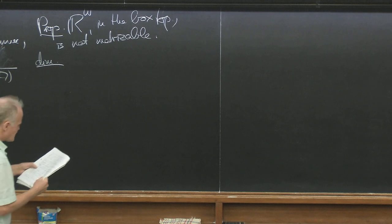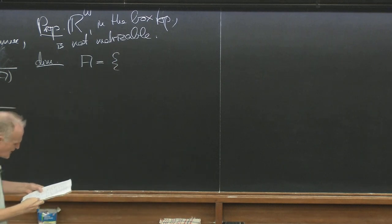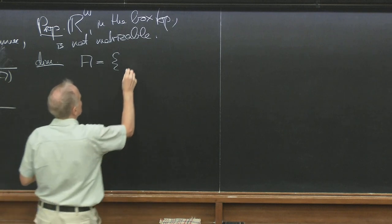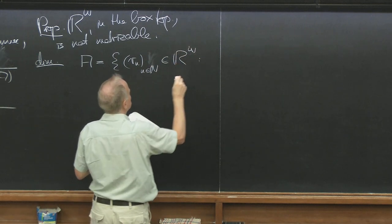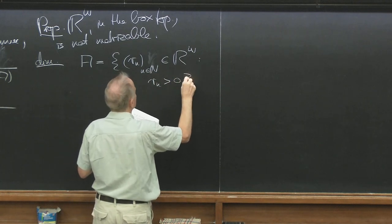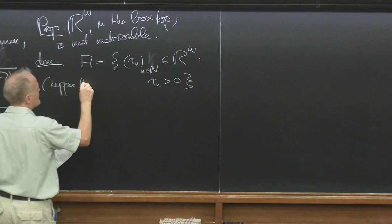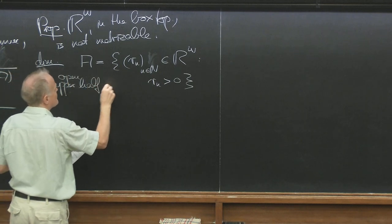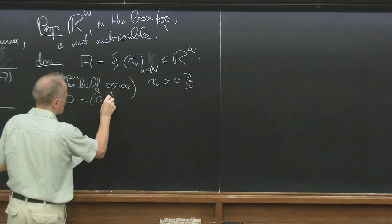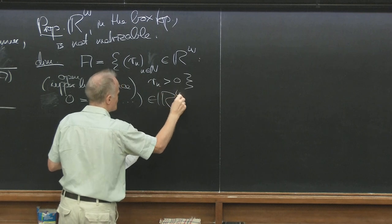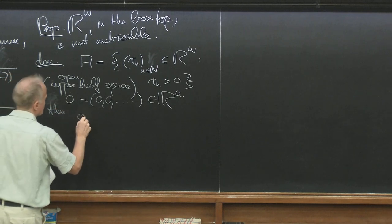We apply the sequence lemma. Let A be the upper half space — all points in R^ω with positive coordinates: A = {(x_n) in R^ω : x_n > 0 for all n in N}. Then zero — the point with all coordinates zero — is in the closure of A. This is easy: take any neighborhood of zero in the box topology, a product of open sets each containing zero, so each contains an interval (−ε_n, ε_n), and ε_n/2 is in each interval and is positive.